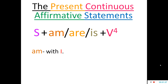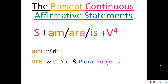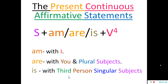Am is always used with 'I'. Are is used with 'you' and plural subjects. Is is used with the third person singular number subjects. So remember this formula: Subject + am or are or is + V4.